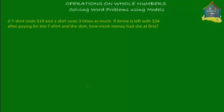Welcome to homecampus.com.sg. Let's solve a word problem on whole numbers. A t-shirt costs $19 and a skirt costs three times as much. If Annie is left with $24 after paying for the t-shirt and the skirt, how much money had she at first?